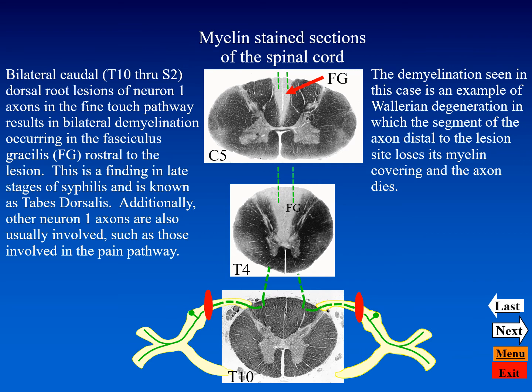This condition is called tabes dorsalis, in which multiple dorsal roots are impacted at a caudal level. This is one of the findings that occurs in the late stages of syphilis. Demyelination of axons carrying fine touch information is isolated to the fasciculus gracilis, as these are the dorsal roots involved below the T6 level.